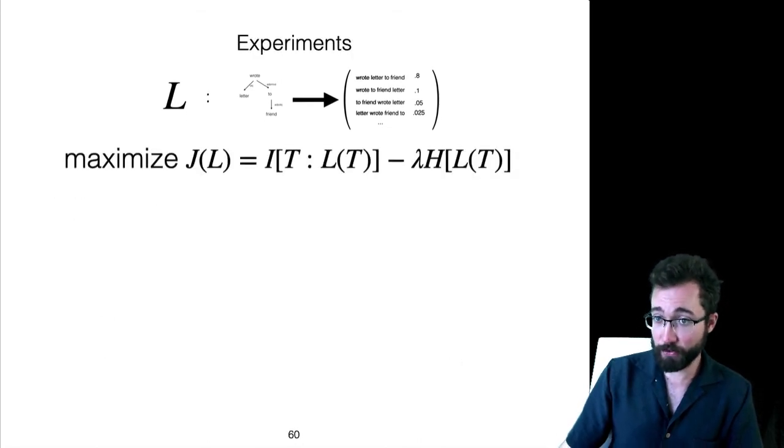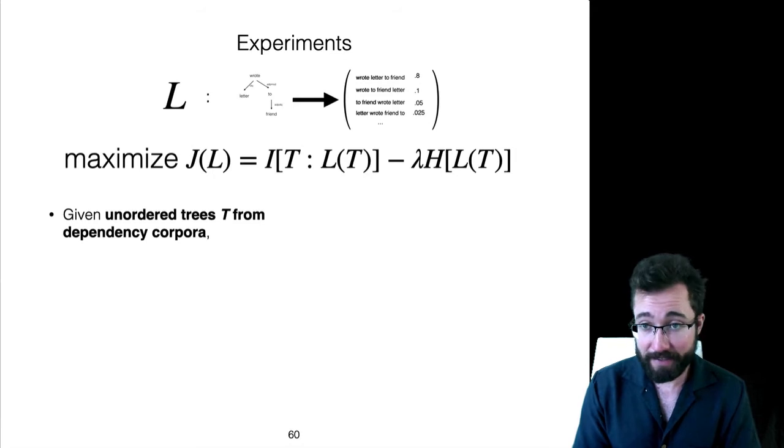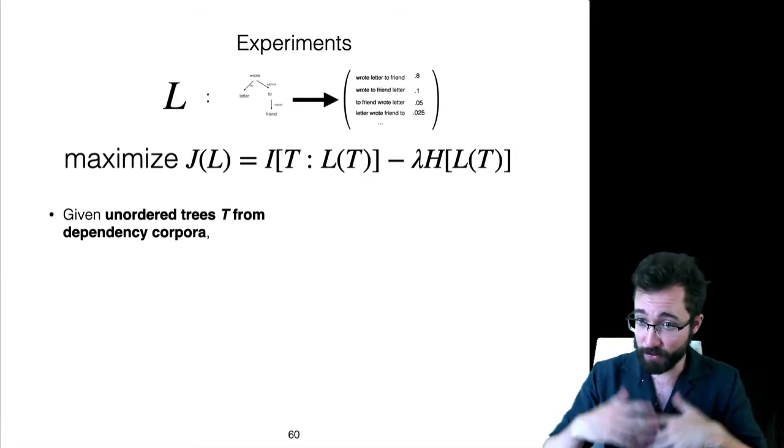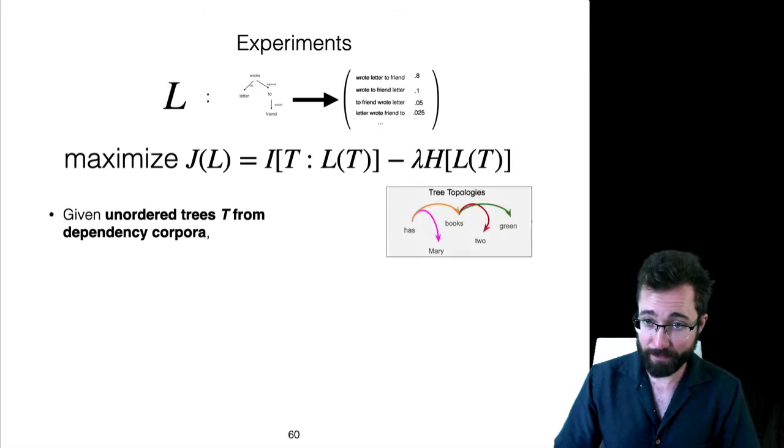Our approach to explaining the Greenberg universals is going to look like this. Given the unordered dependency trees T from a dependency corpus, which is like your distribution over meanings you're trying to express in a language, you have your unordered tree topologies like this.